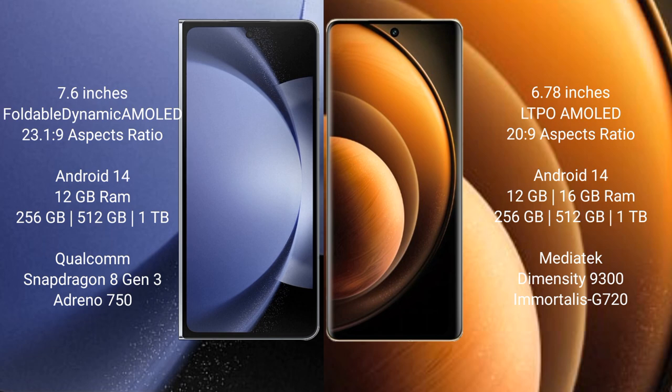The Samsung Galaxy Z Fold 6 comes with 12GB RAM and 256GB, 512GB, or 1TB internal storage, with a Qualcomm Snapdragon 8 Gen 3 processor and Adreno 750 GPU. The Vivo X100 comes with 12GB or 16GB RAM and 256GB, 512GB, or 1TB internal storage, with a MediaTek Dimensity 9300 processor and Immortalis-G720 GPU.